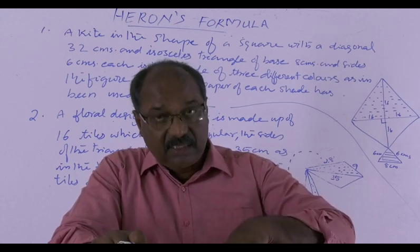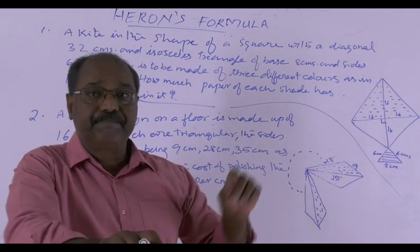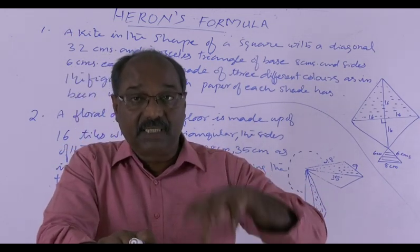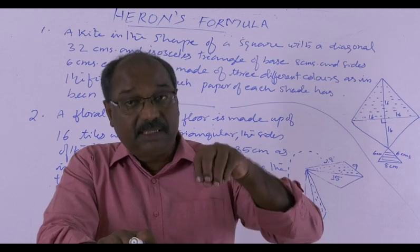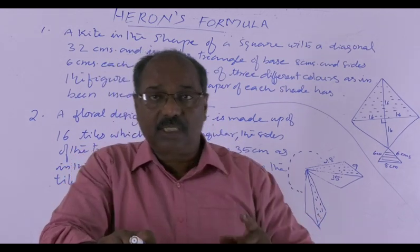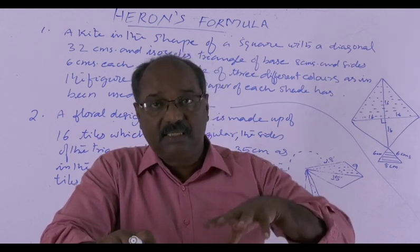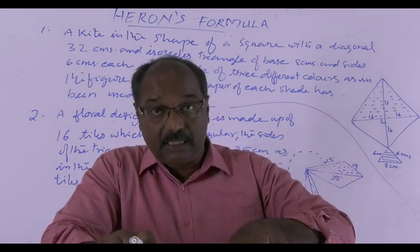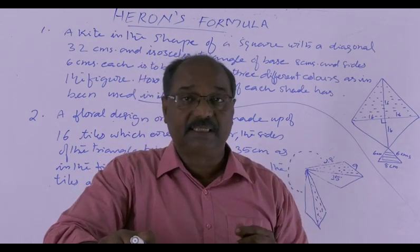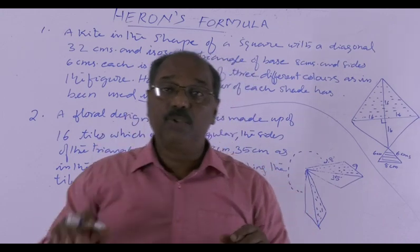So first find the area of one triangle with these sides. Multiply it with 16, we get the total area. Multiply this total area with 50, we get total cost of polishing in paise. And if we again divide it by 100, we will get the cost in rupees. So this also can be done by you yourself.